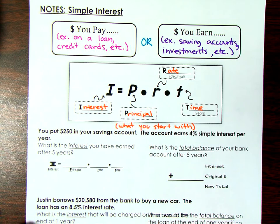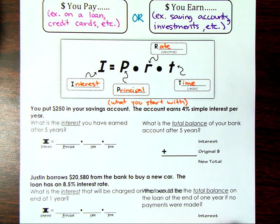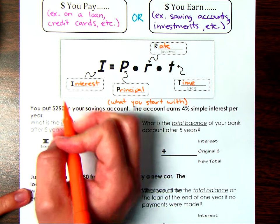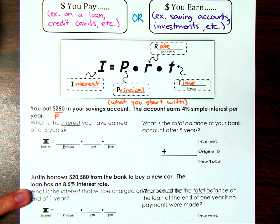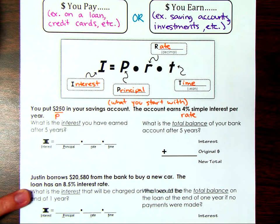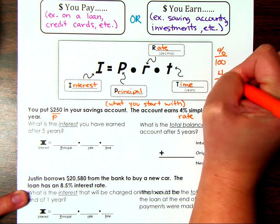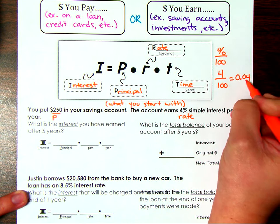Let's say you put two hundred fifty dollars into your savings account — that's what you start with. The account earns four percent simple interest, which is our rate as a percent, so we need to change that to a decimal. We want to find the interest earned after five years. Remember, percent means out of one hundred, so four percent is four hundredths, or zero point zero four.